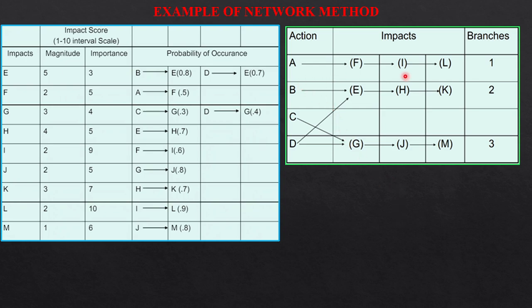If I calculate the score for branch 1, this is F into I into L. F is 2 into 5, I have to calculate F as magnitude into importance and then into probability. This probability value is 0.5 because F is caused by A. So F due to A is 0.5. The branch 1 for F part, the value of F is magnitude and importance 2 into 5 and then probability.